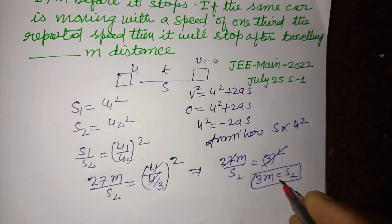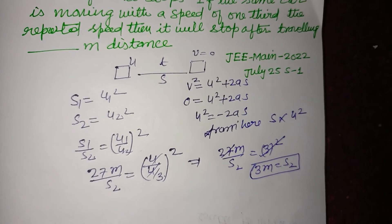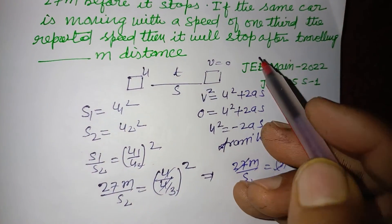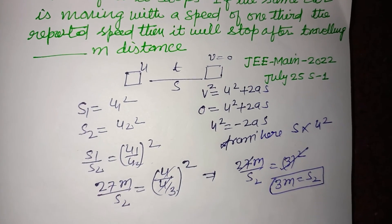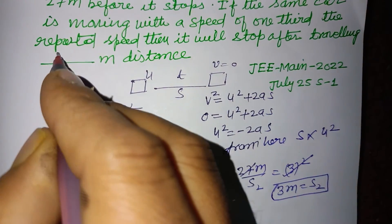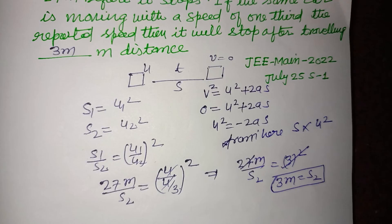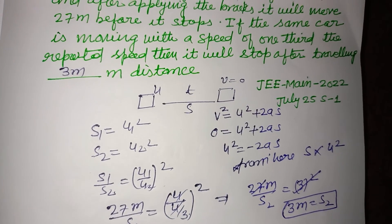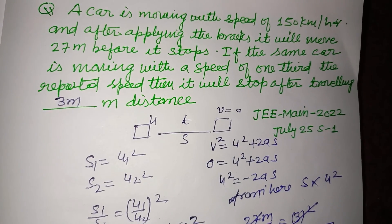This is the distance when it moves with a velocity of one-third the initial velocity. So 3 meters is the correct answer. I hope you got it. Please like the video, subscribe to the channel. Thanks for watching.